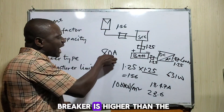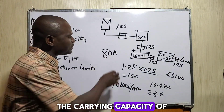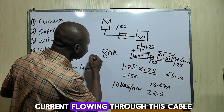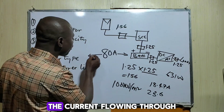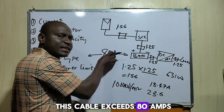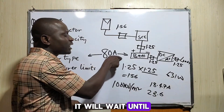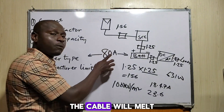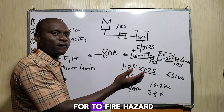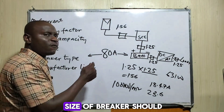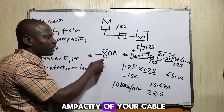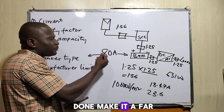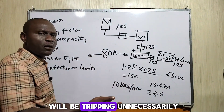The breaker size should not be 100 amps or 125 amps if the cable is rated 80 amps. The main purpose of a breaker is to protect your cable from overheating or melting due to high current. If the breaker rating is higher than the cable's ampacity — say 100 amps — the cable will already be overheating before the breaker trips, which can lead to fire hazards. However, don't make the breaker far too small either, as it will trip unnecessarily.